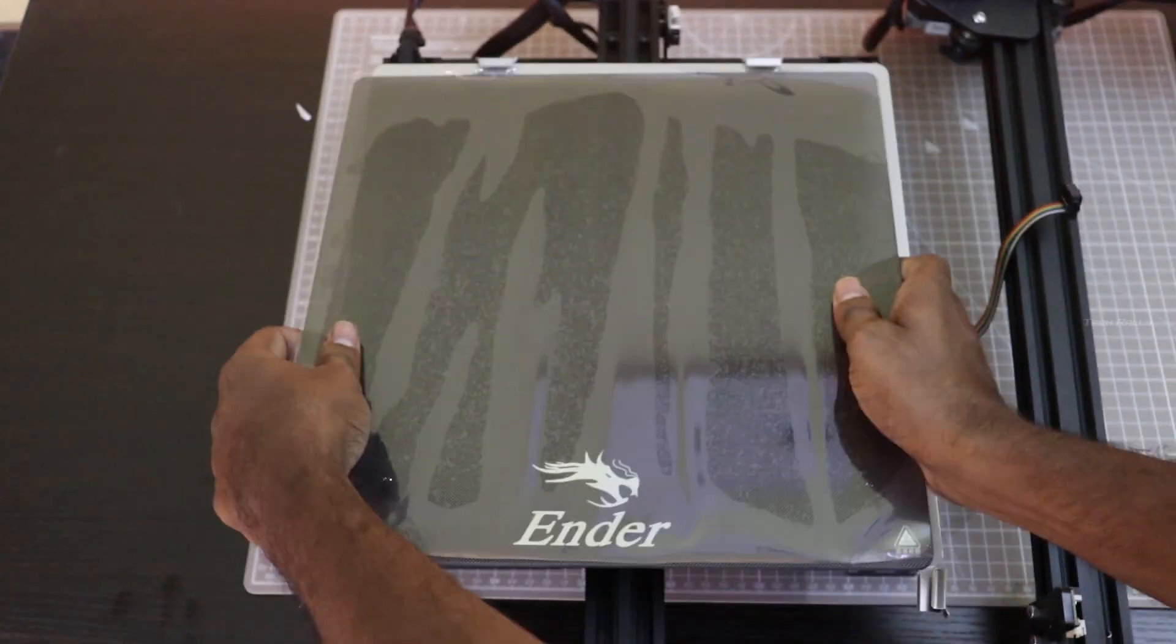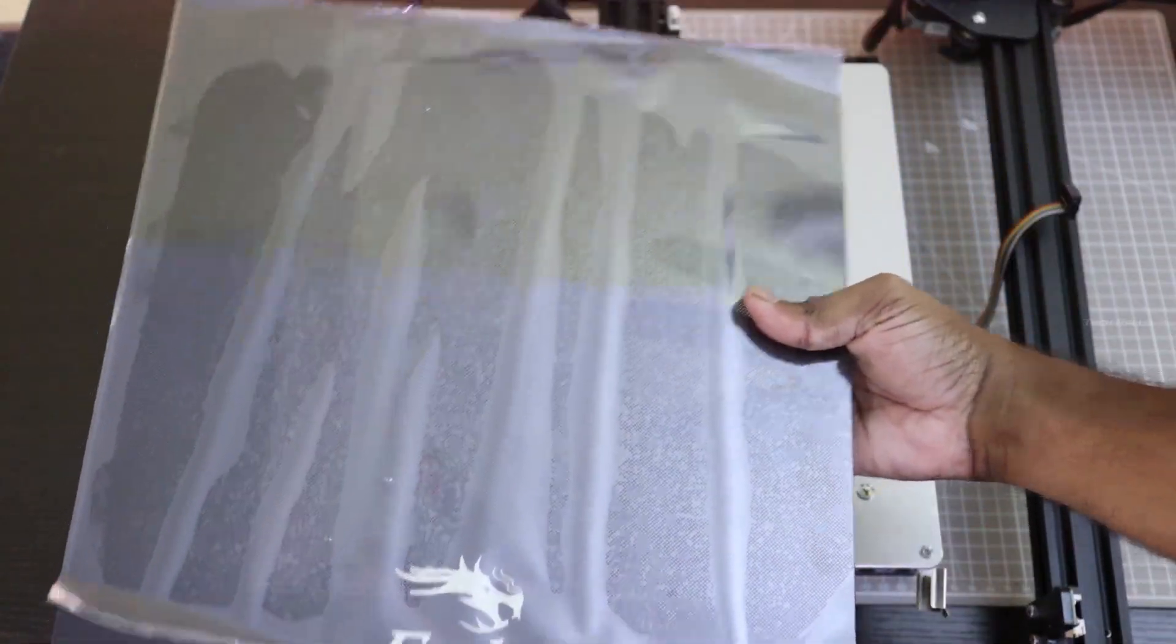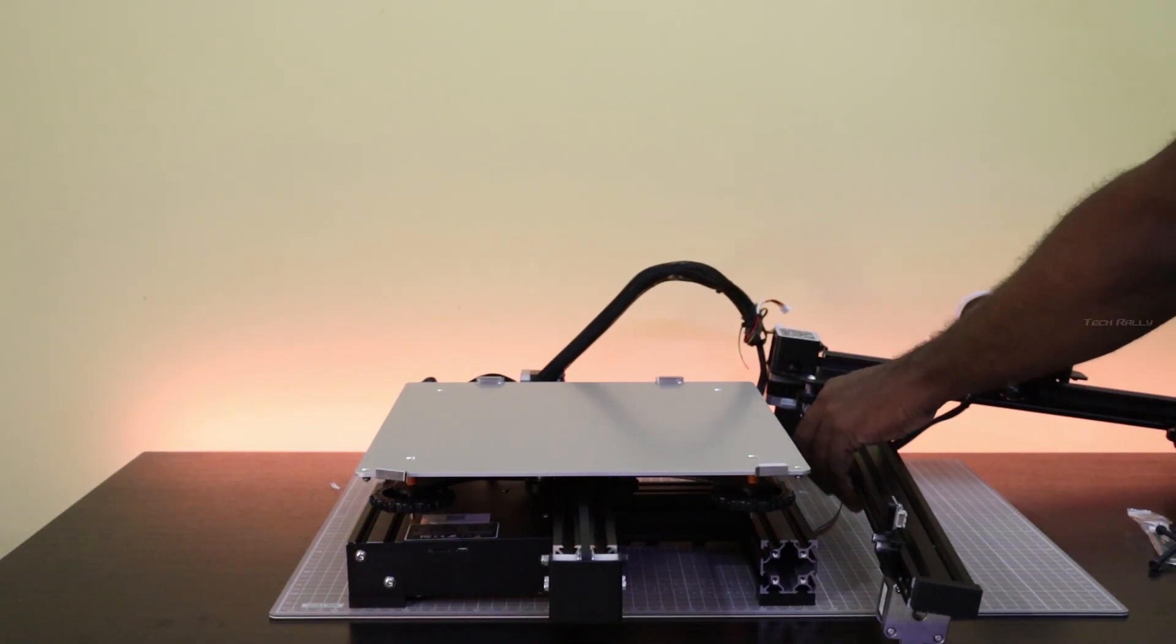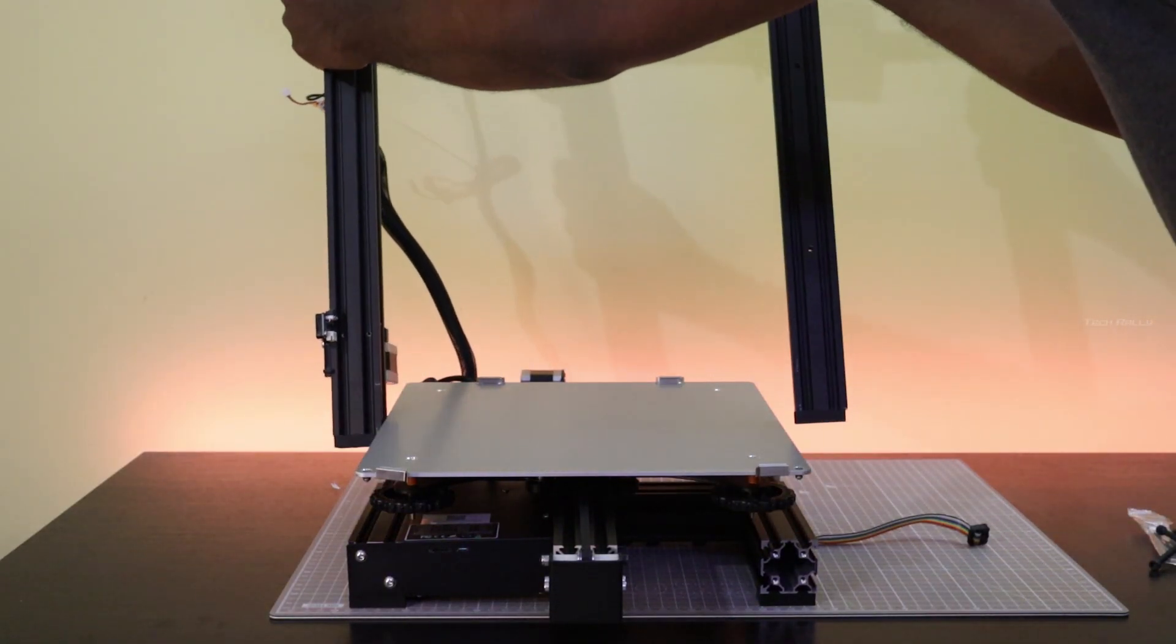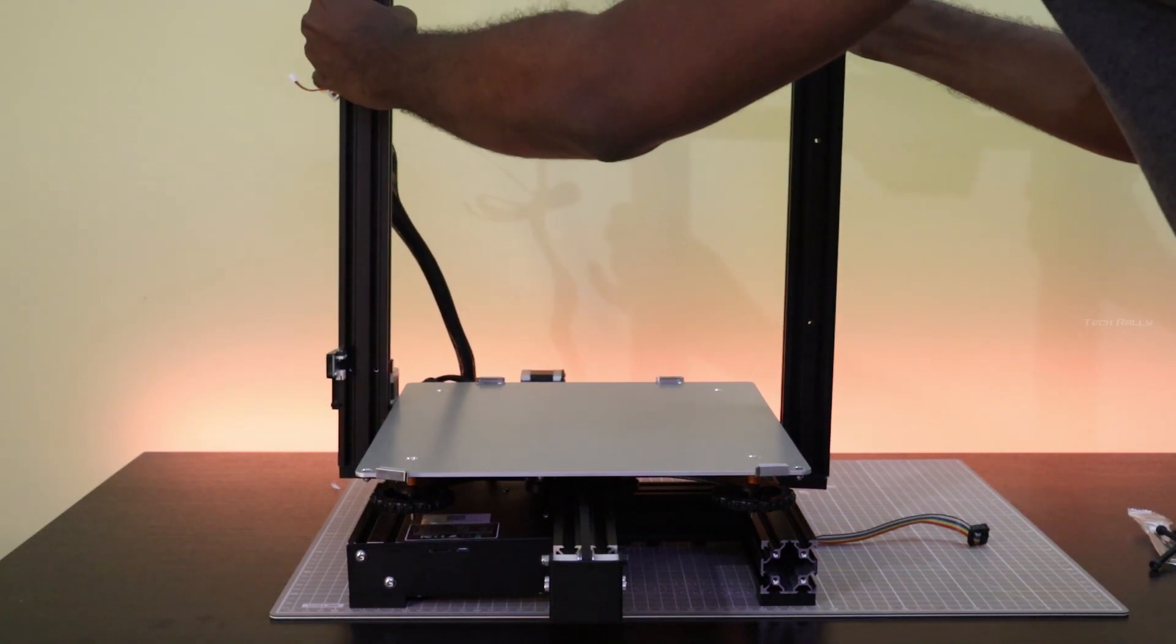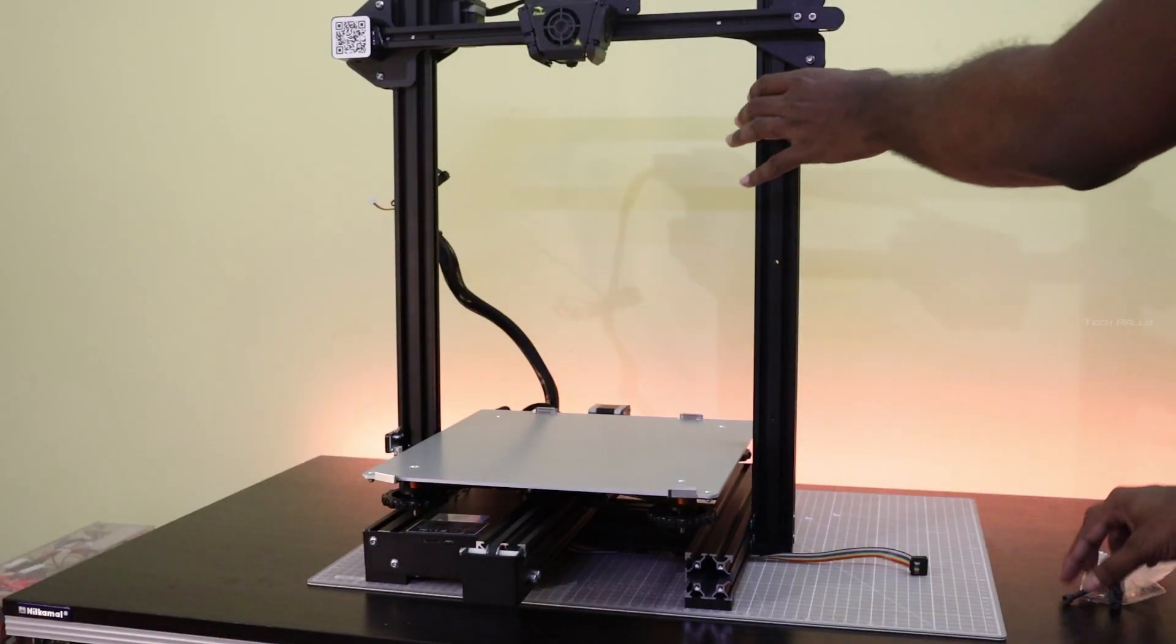Before installing the printer, I removed the glass bed and I took the top aluminum profile and inserted it into the slot and I installed the allen bolts.